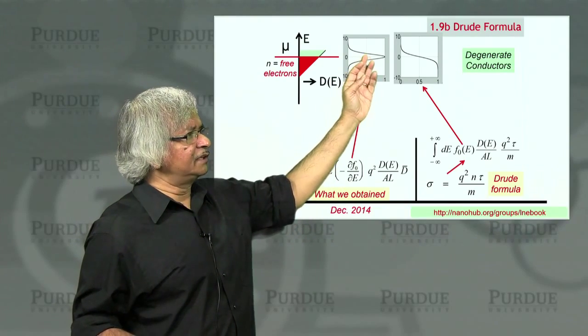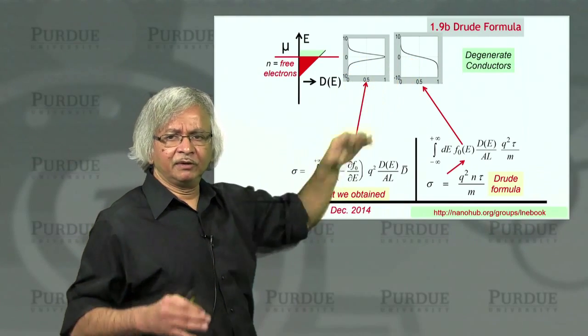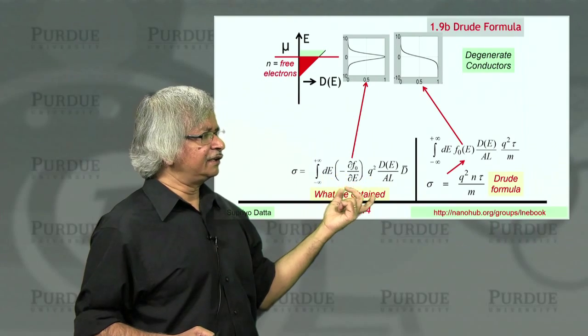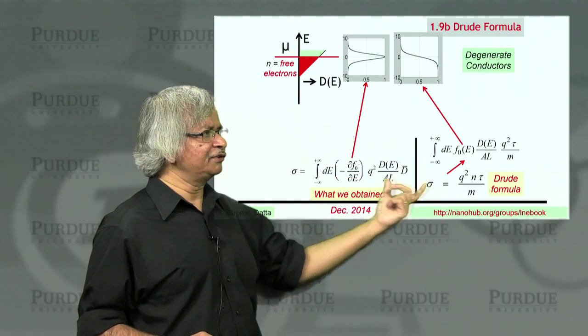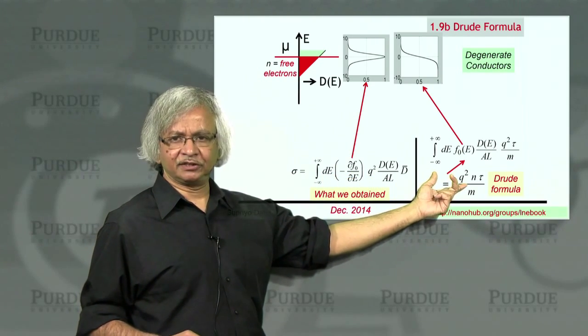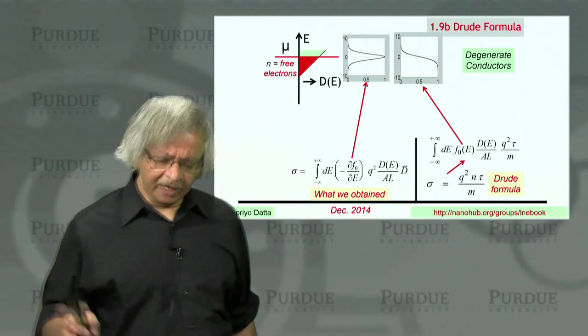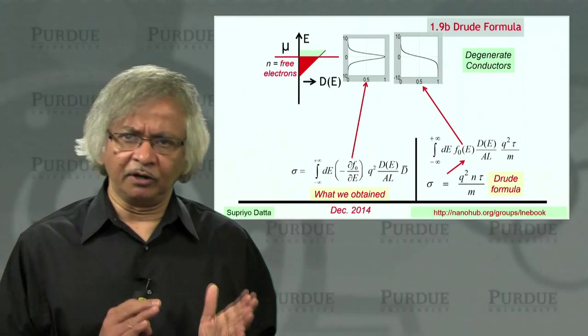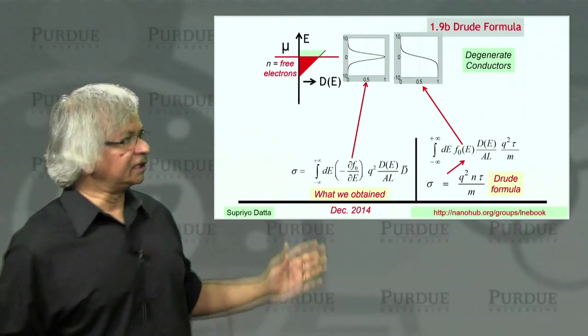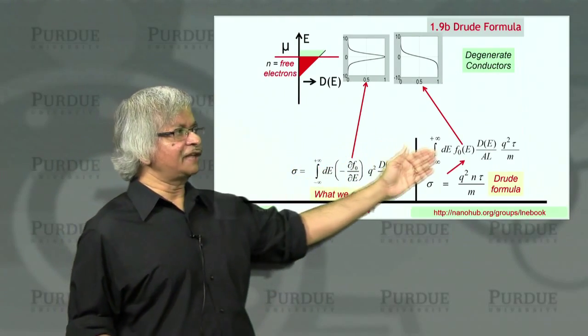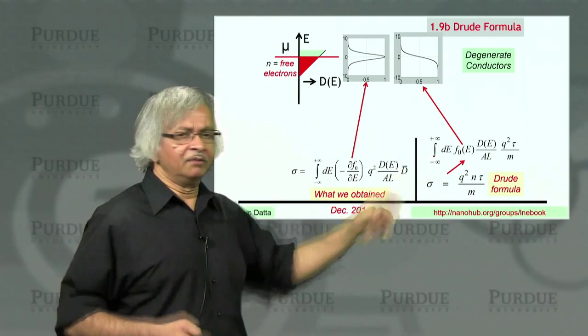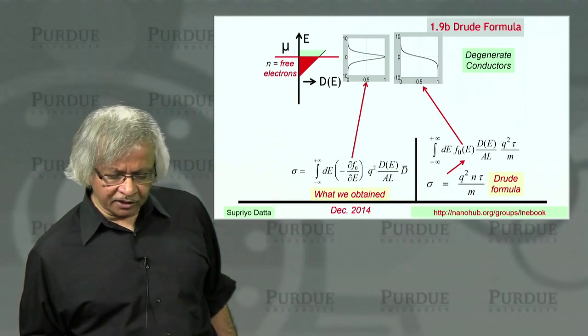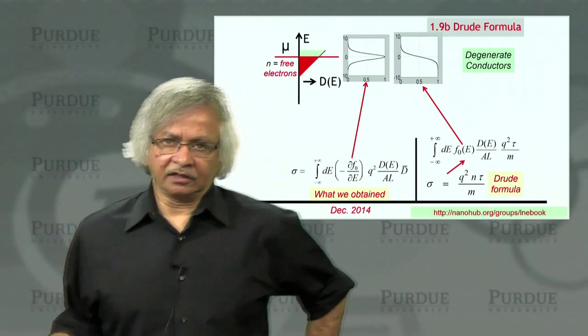So that when the kT, this width of this curve, this kT is much less than the distance from the Fermi energy to the bottom of the band. So that's what you'd normally call a degenerate conductor. Now, and in that case, as you can see, there's a very big difference between this function and that function. And it may not be at all obvious that an expression like this would give you the same result as an expression like this.